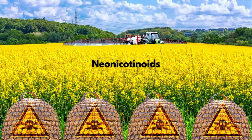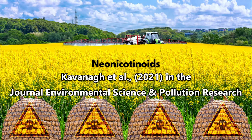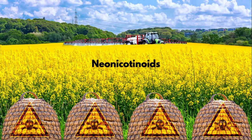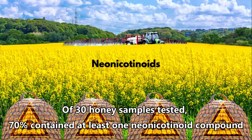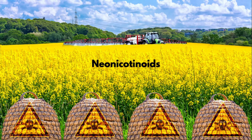Neonicotinoids are a widely used group of insecticides globally. In Ireland in 2021, research published from Trinity College and DCU found that neonicotinoid pesticide residues were in Irish honey — 70% of 30 honey samples contained at least one neonicotinoid compound. These are systemic insecticides getting into honey not just in Ireland but worldwide. Importantly, the sampling wasn't just from colonies in agricultural areas, but also urban, domestic, sports, and amenity contexts — so this is not just a problem associated with agriculture.